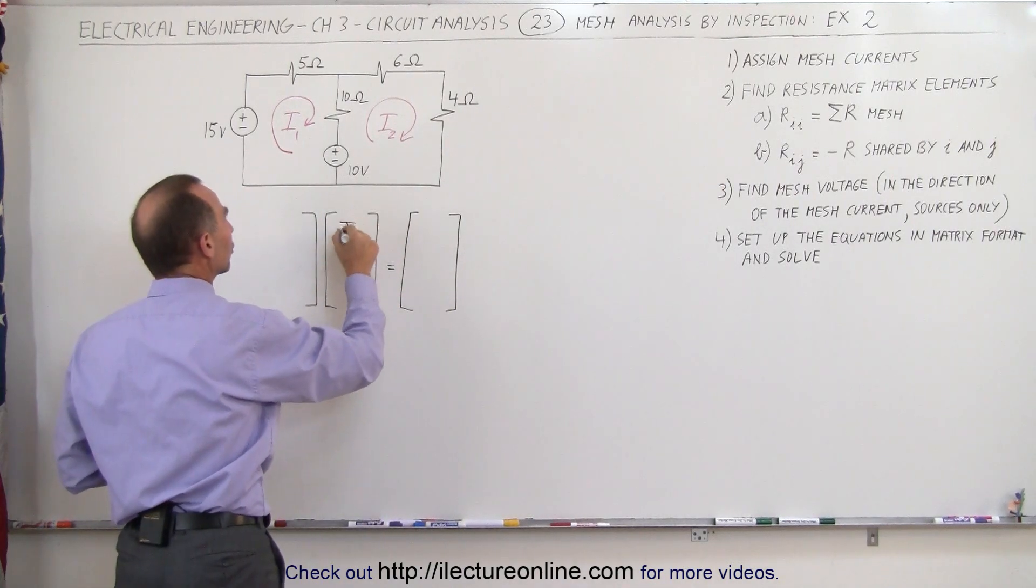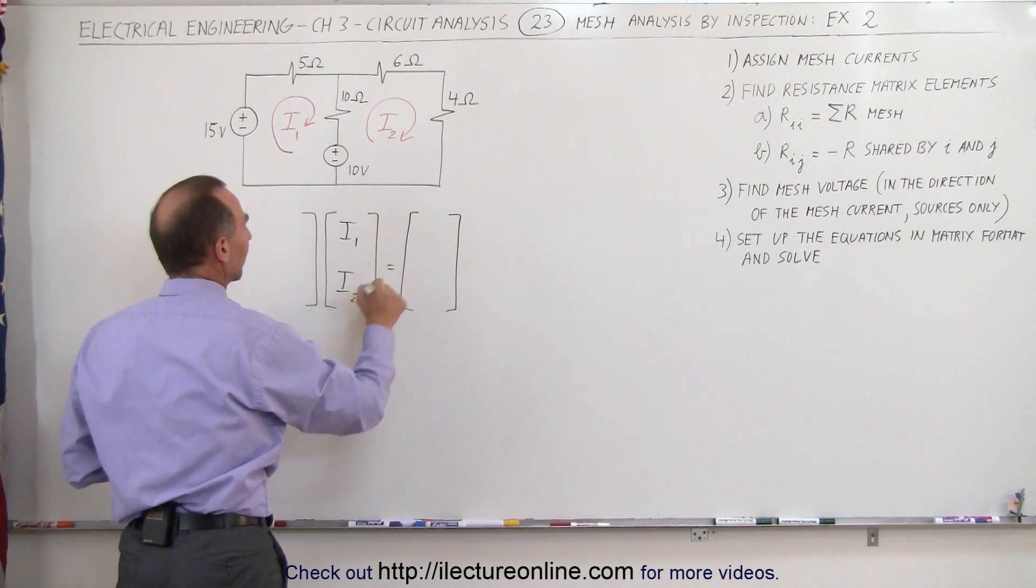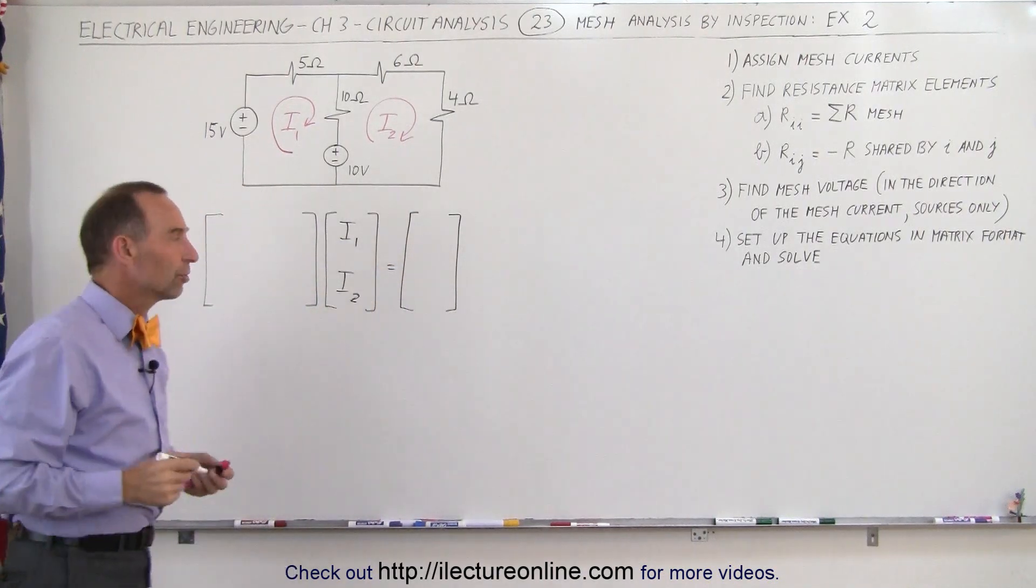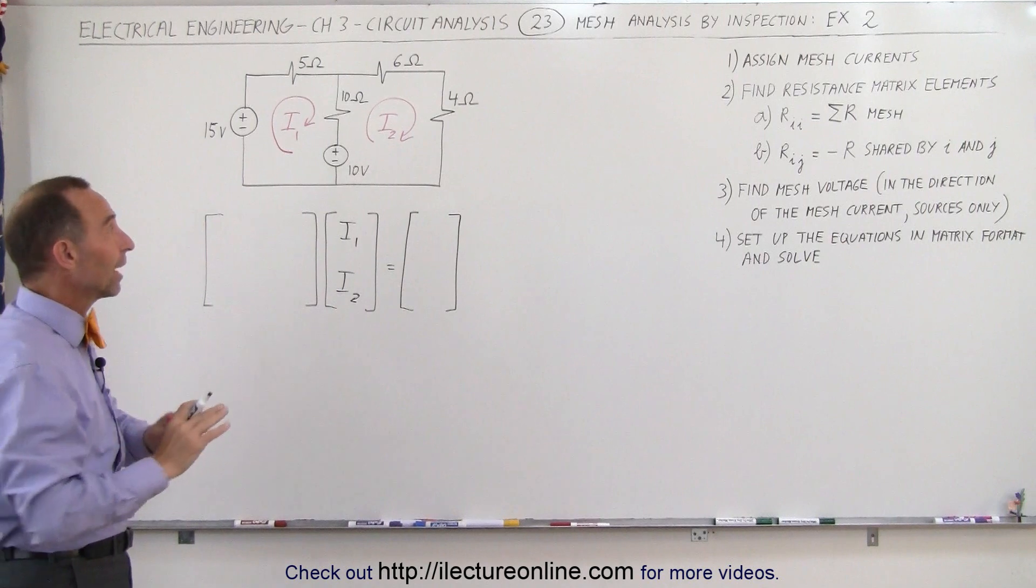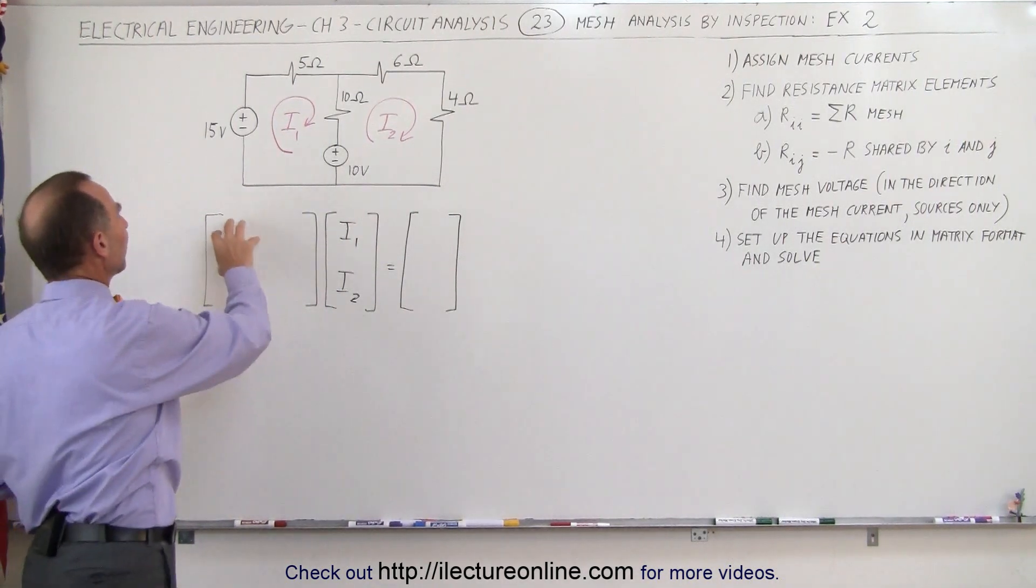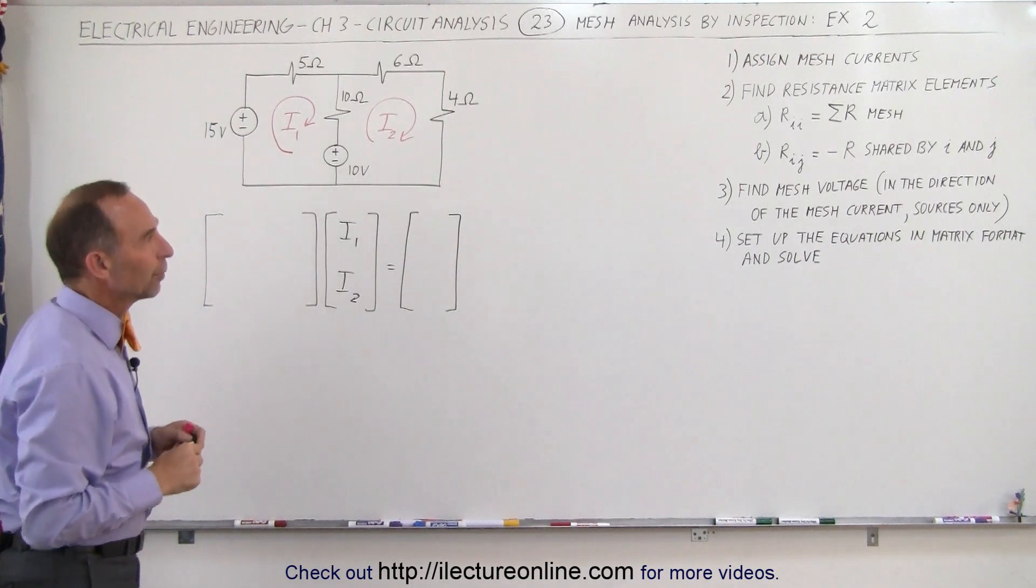This matrix right here will have the unknown currents and this matrix will have the voltages for each mesh as we go around each of the meshes. We add up all the voltages only from the voltage sources, not from any voltage drops across the resistors. But first we want to find the elements of this resistance matrix.